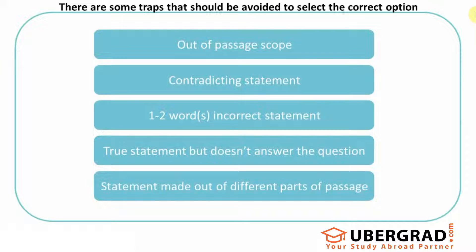Finally, the statement is made out of different parts of the passage — multiple statements are mixed together, giving you a jumbled statement that sort of looks valid. Unless you really understand the passage and those two lines in context, if you just match words you'll get confused and mark it wrong. This trap is very unlikely to catch you unless you don't read the passage properly and instead just match words to pick the correct option. This trap is basically set for students who follow that approach.